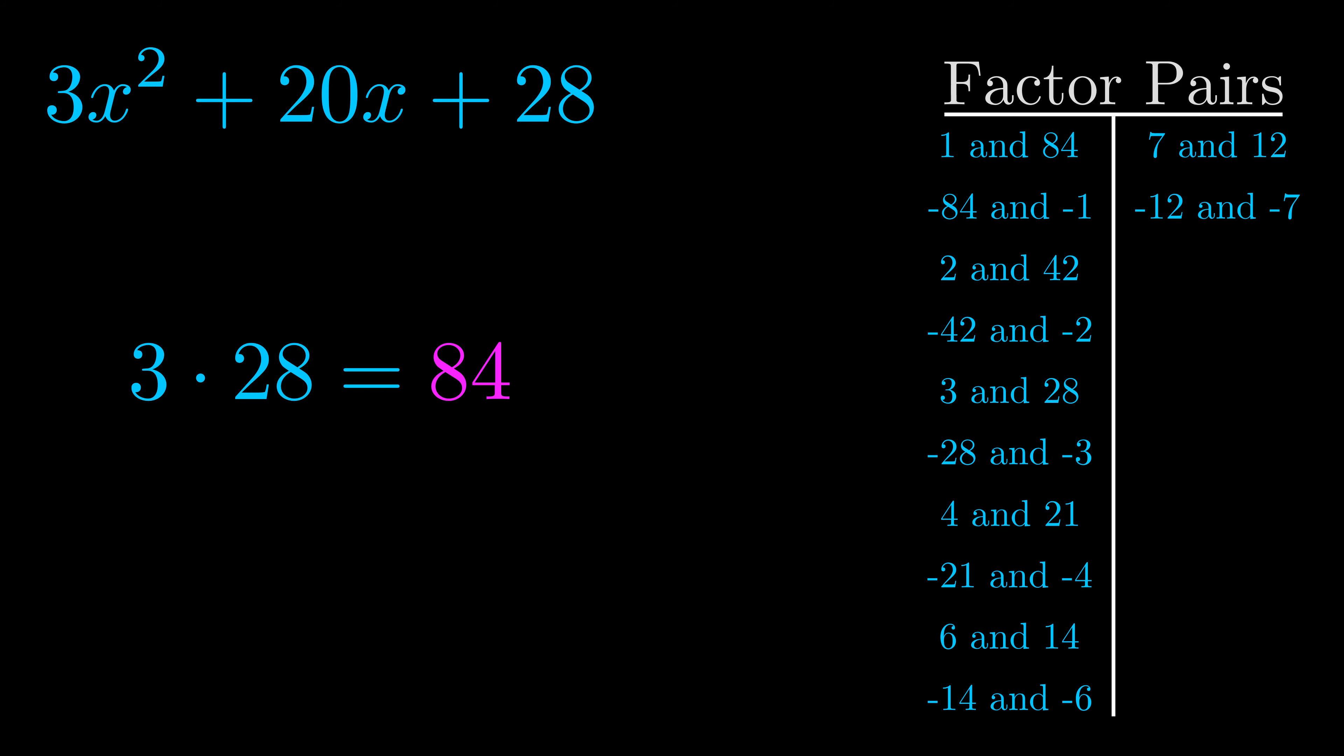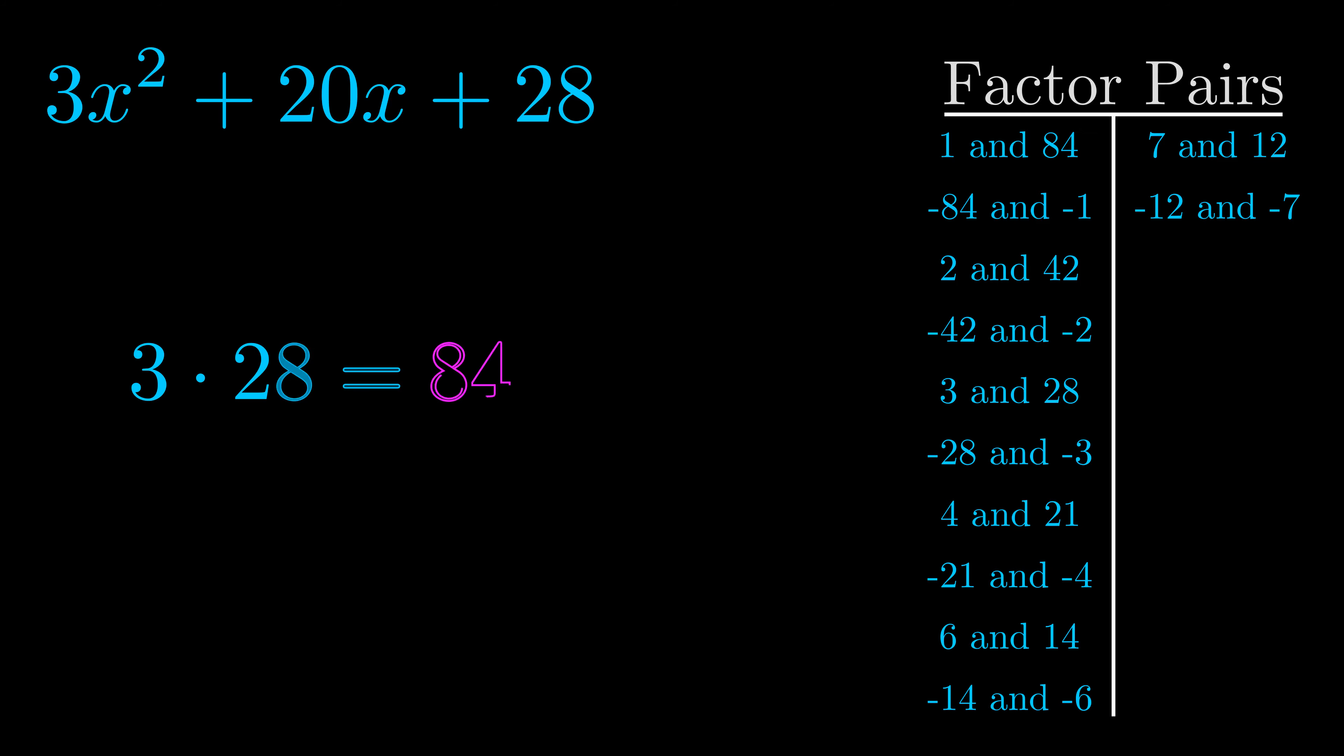Now once you have these factor pairs the goal is to find which of these pairs adds to the b value. The b value is the coefficient on the x term. That's the middle term, the one that we haven't done anything with yet. And really this is the only factor pair that we need.